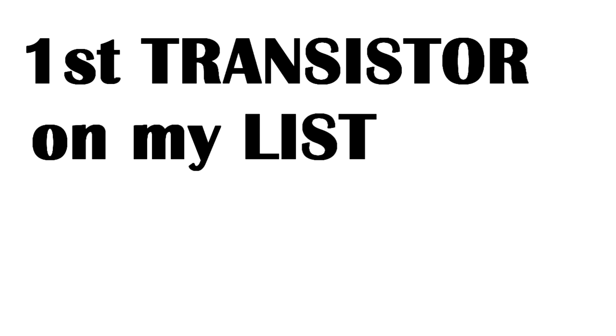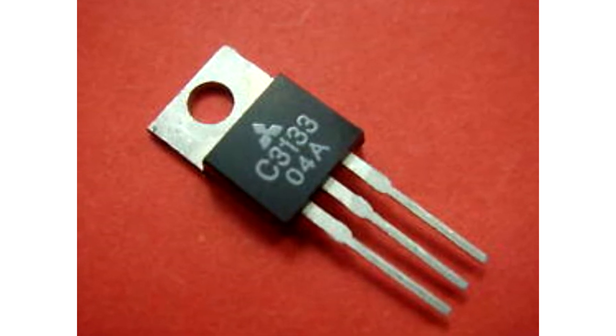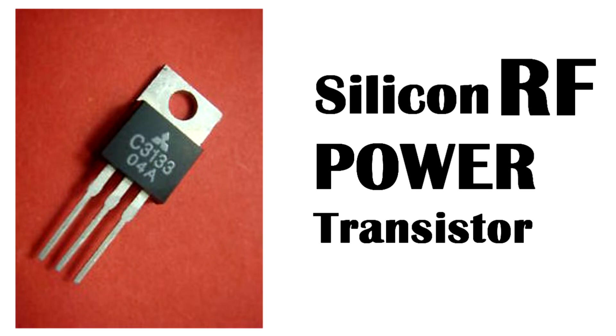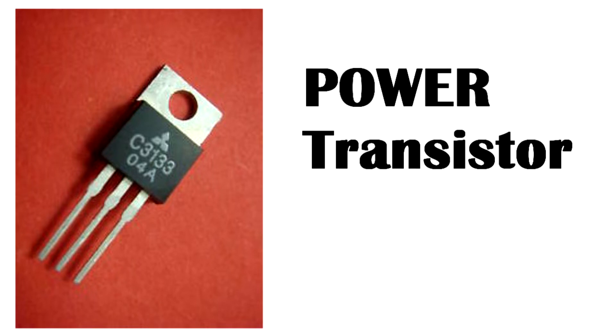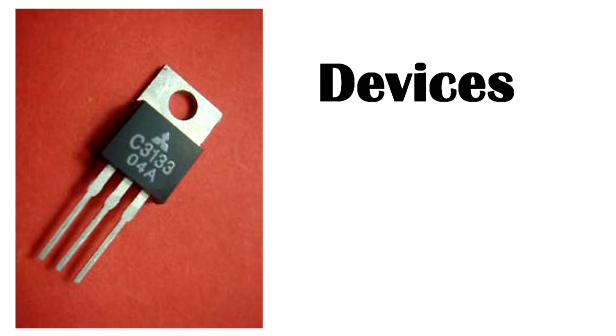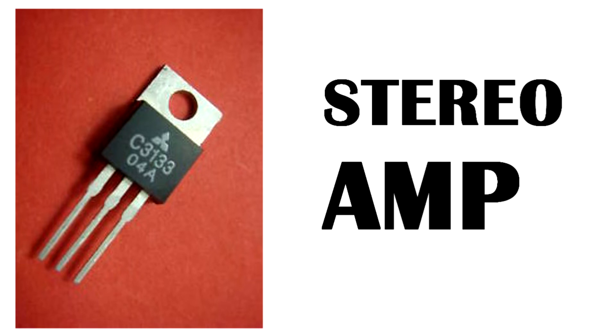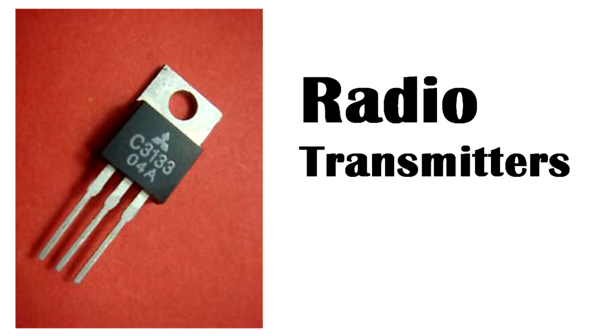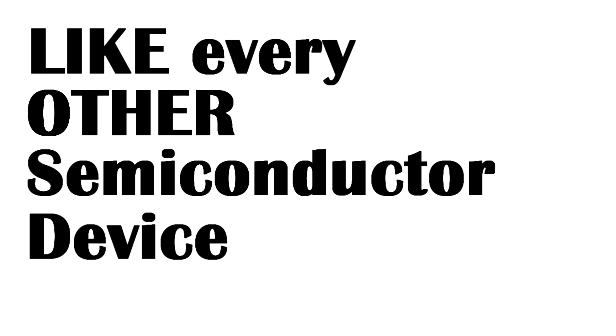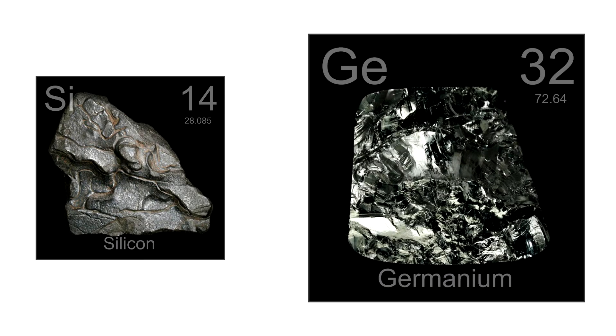The first transistor on my list is 2SC3133 which is a silicon RF power transistor. It is commonly used as a power transistor which is designed to handle high power radio frequency signals in devices such as stereo amplifiers, radio transmitters, television monitors, etc. Like every other semiconductor device, it is made from silicon and germanium doped with impurities to induce changes in its electrical properties.